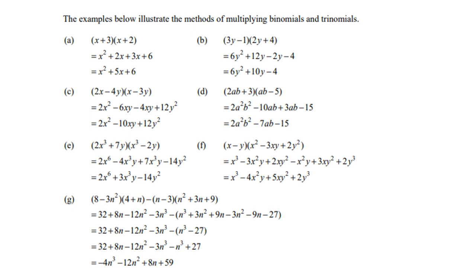Look at D. 2AB times AB is 2A squared B squared. 2AB times negative 5 is negative 10AB. 3 times AB is 3AB. 3 times negative 5 is negative 15. Again, collect the like terms. Negative 10AB plus 3AB is negative 7AB.